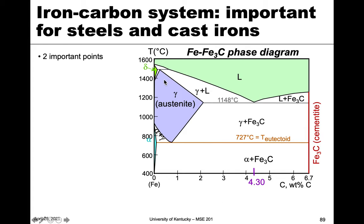This is the iron-iron-carbide phase diagram. The reason I mention iron-iron-carbide instead of iron-carbon is if you look at it, you'll notice that we go from 0% carbon, which is pure iron, but we only go to 6.7 weight percent carbon. That's because that composition is the composition of Fe3C, which is known as cementite — an iron-carbide because it's a compound of iron and carbon. We only look at that portion because that's basically the only important part for steels and cast irons, so rarely do we look above 6.7 weight percent carbon.